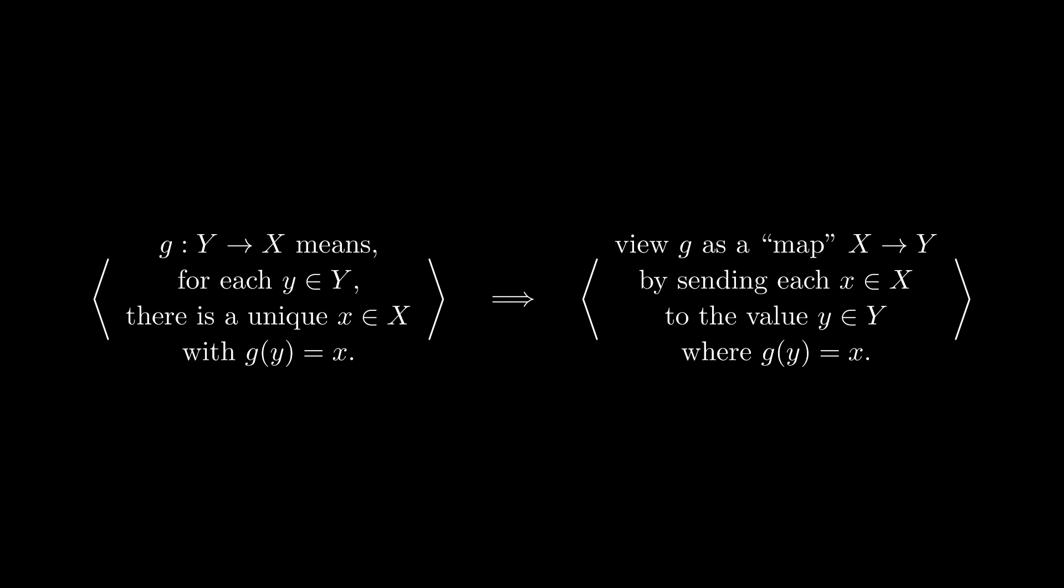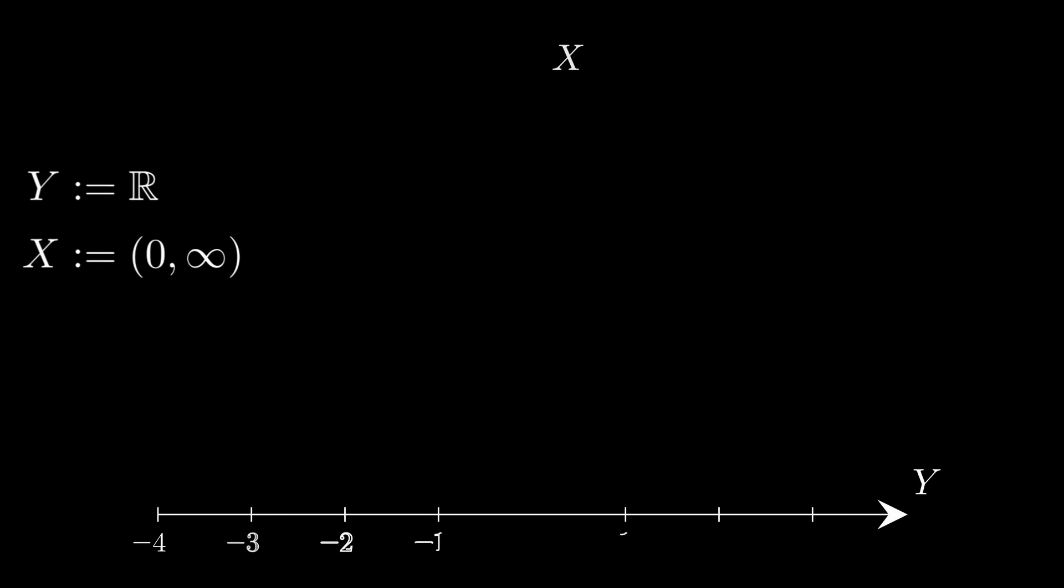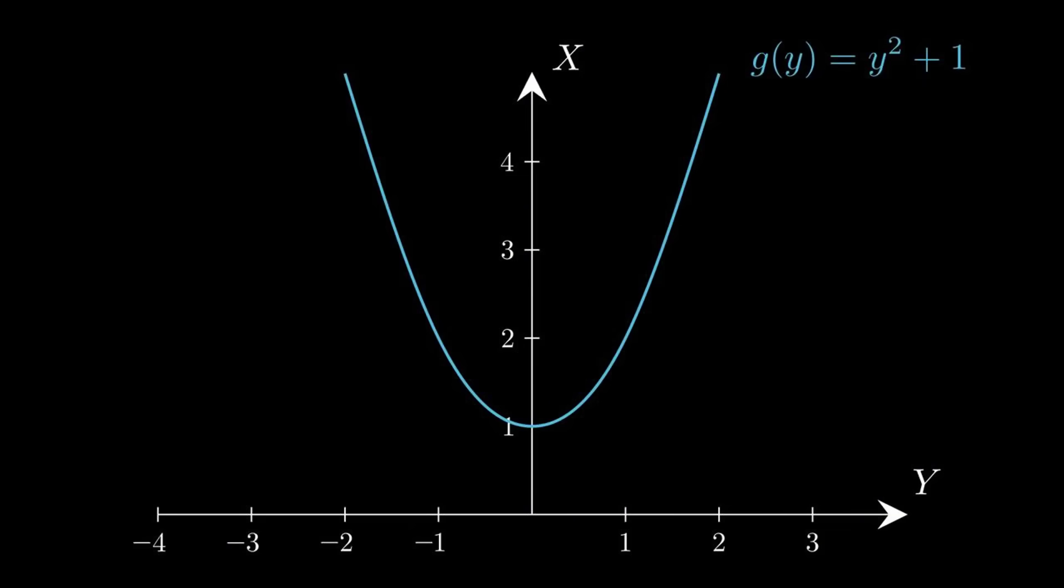If, for example, we take Y to be the set of real numbers and take X to be the set of positive real numbers, and then take G to be the function sending Y to Y squared plus 1, then we can see the two main problems with this approach. Consider the point X equals 1. There are multiple candidates we could choose for Y. We could take Y equals 1 or Y equals minus 1, and G sends both to X equals 1. On the other hand, the point X equals 1 half is outside the image of G, meaning that there do not exist any Y that map to X in this situation.